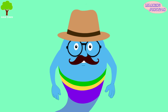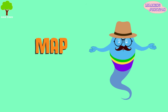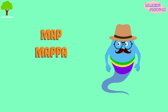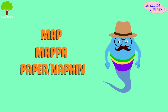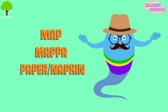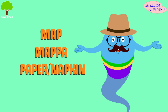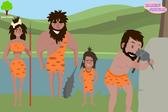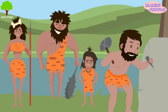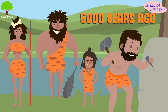The word map is originated from the Latin word mappa, that means a paper or napkin. These were the materials the earliest maps of the world were drawn on. The history of mapping can be traced to approximately 5,000 years ago.